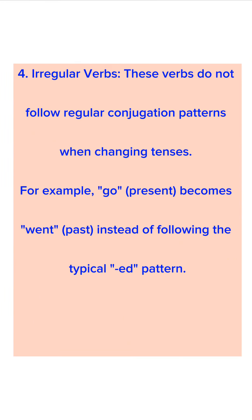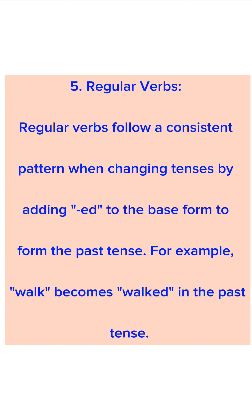4. Irregular verbs. These verbs do not follow regular conjugation patterns when changing tenses. For example, go (present) becomes went (past tense), instead of following the typical -ed pattern. 5. Regular verbs. Regular verbs follow a consistent pattern when changing tenses by adding -ed to the base form to form the past tense. For example, walk becomes walked in the past tense.